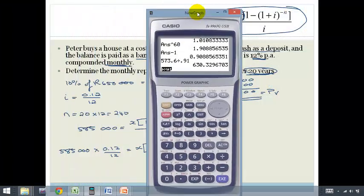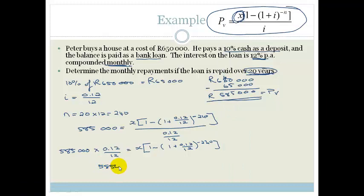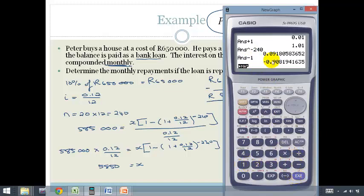So let us get out our calculator and start with the left hand side. We've got 585,000 times 0.12, divided by 12, and it comes to 5850. Now the right hand side is a bit tricky, so we're going to take it slowly. We're going to go 0.12 divided by 12, add our 1, then take it to the power of negative 240, which is going to be a very small number, and we need to subtract that from 1, which is 0.91.